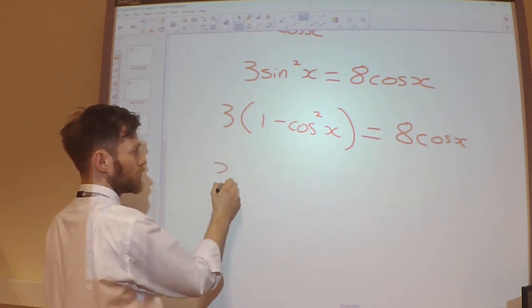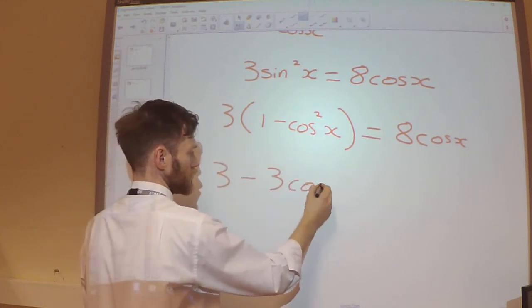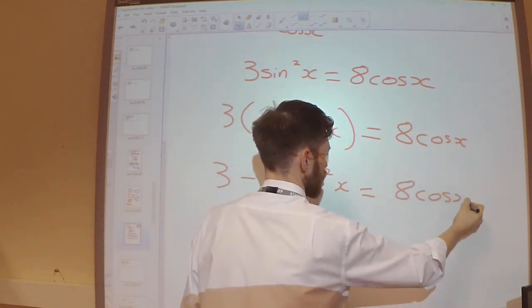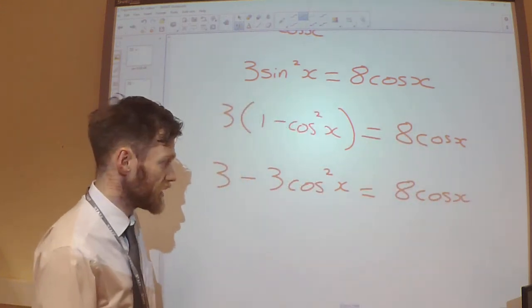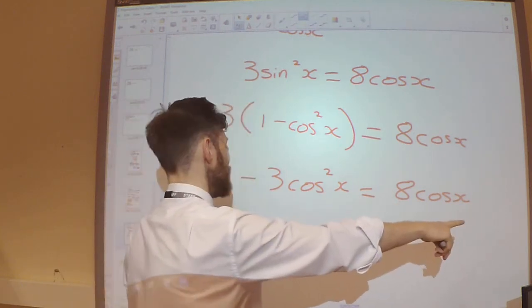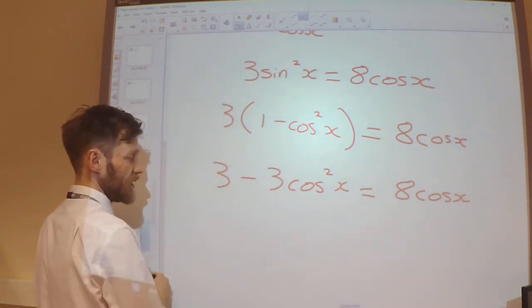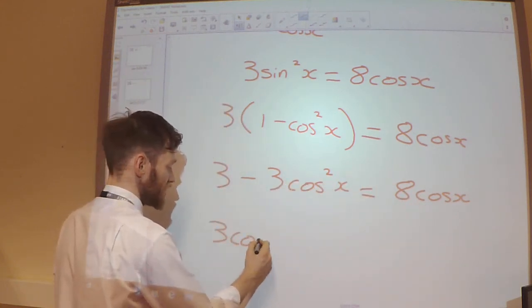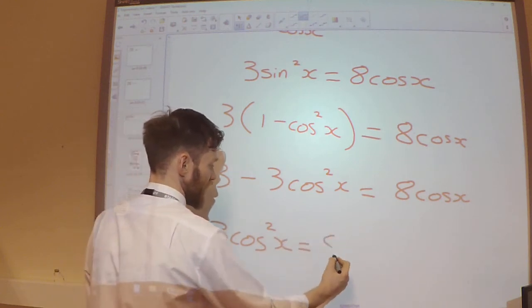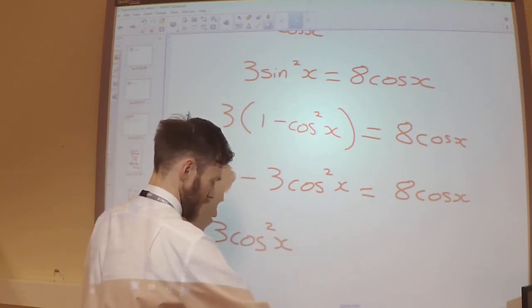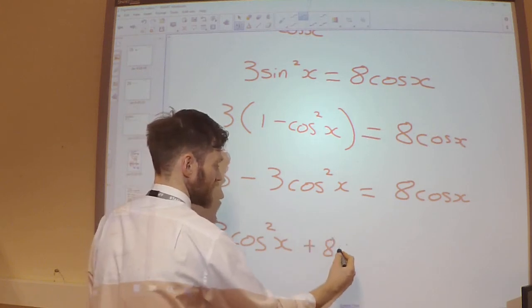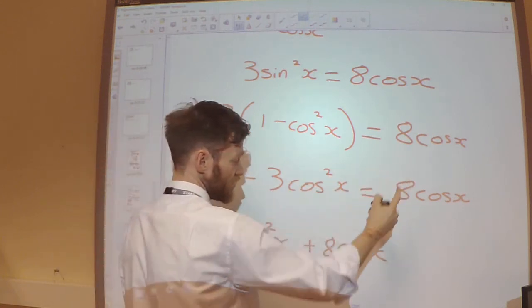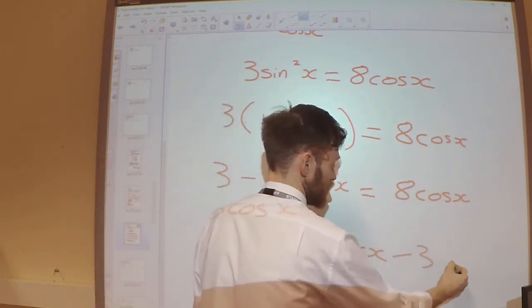I'm going to expand the brackets. And move everything to the right-hand side of the equation. So I will end up with moving this to the right-hand side will give me a plus 3 cos squared. So I've got the plus 8 cos x and moving this plus 3 to the right-hand side will give me a minus 3.